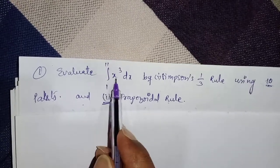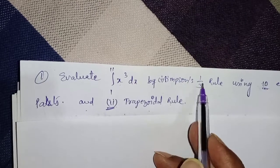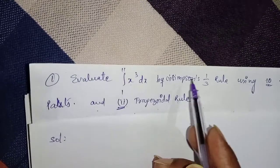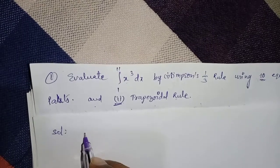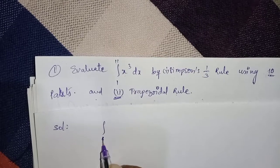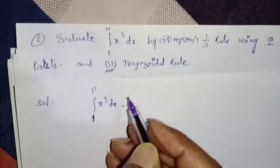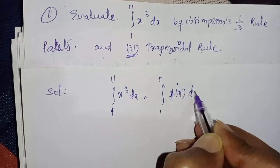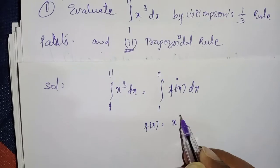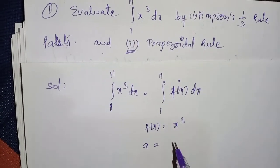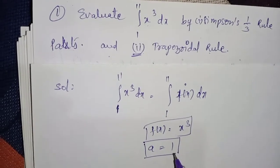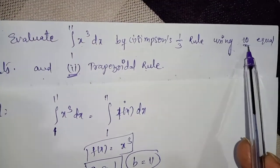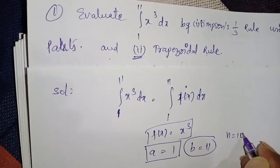Evaluate the integral from 1 to 11 of x³ dx by Simpson's 1/3rd rule using 10 equal parts, and also find the trapezoidal rule. Solution: write the given data — integral 1 to 11 f(x) dx, where f(x) = x³. The lower limit a = 1, upper limit b = 11, and n = 10 equal parts.